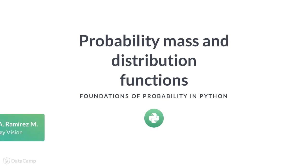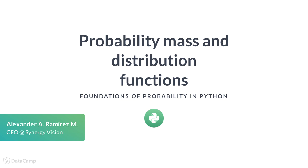After conducting many random experiments, you will notice that some outcomes are more likely than others. This is called a probability distribution. There are two important functions that are useful for probability calculations: the probability mass function and the cumulative distribution function.